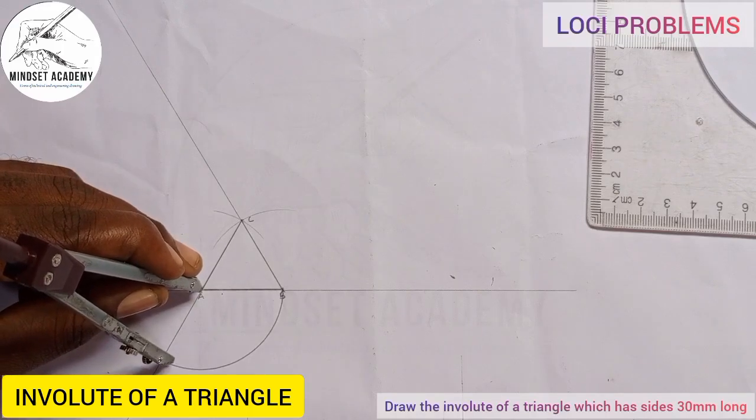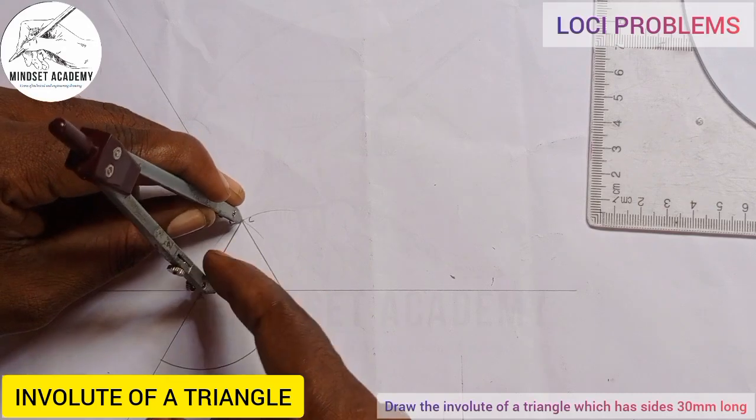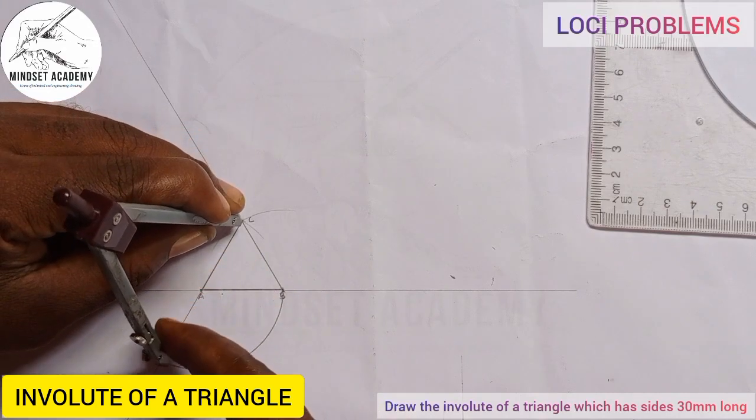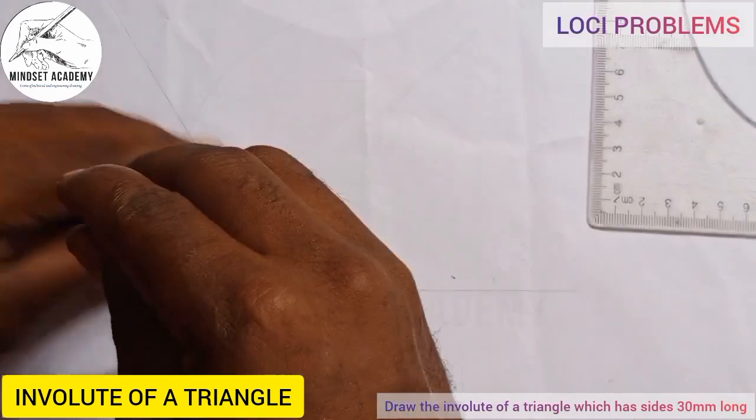Take my compass back to C this way, then I'll extend this back to where the arc is in this manner. Now do the same thing.